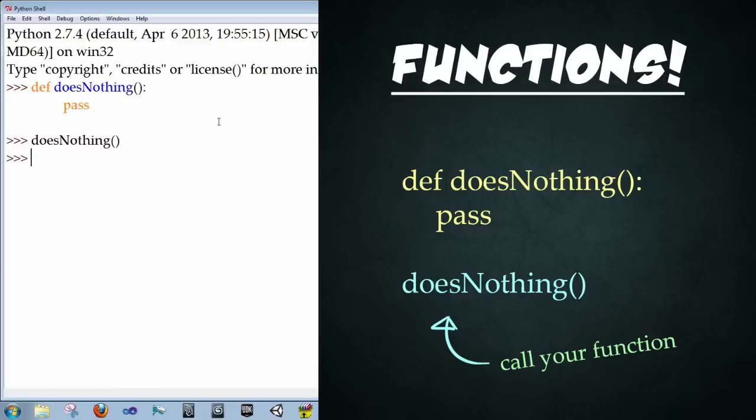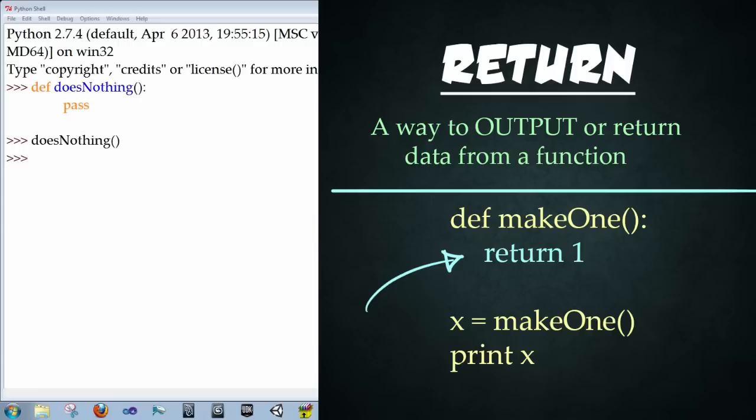Now the power of functions really comes from when you try to get something back from a function. This is where return comes in. Return is a way to return something back from a function. It's a form of output. But arguments are used for input into functions, and return is used for output. So let's try another example.